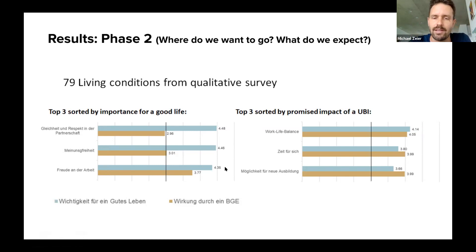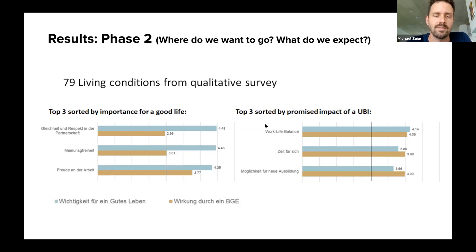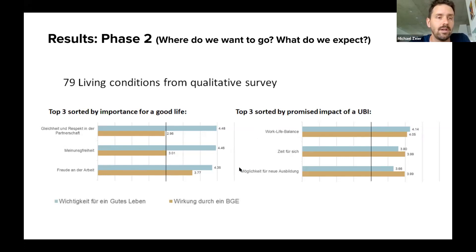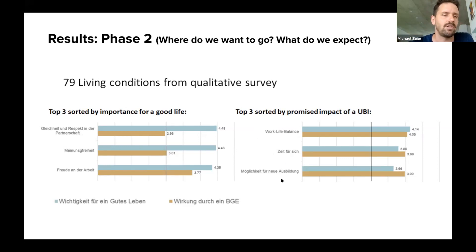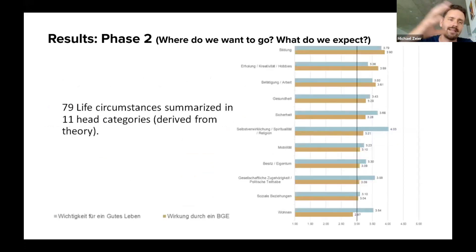On the other side, the things people expect a lot from UBI: first place was work-life balance — having more time for themselves — and having the possibility to pursue further education. People also think these conditions are important for their life. So these are just a few samples of the findings.